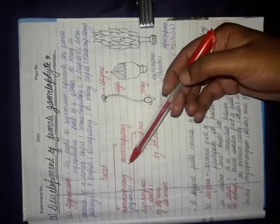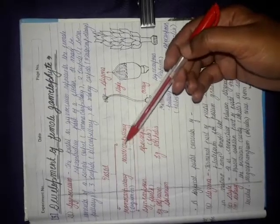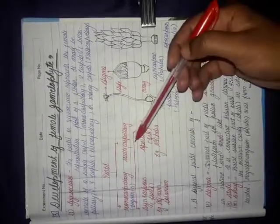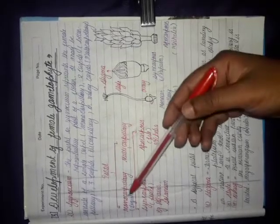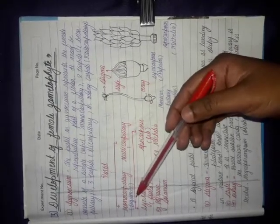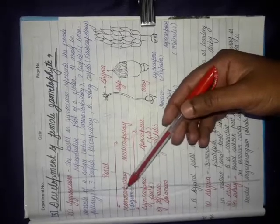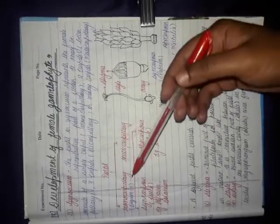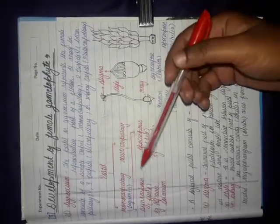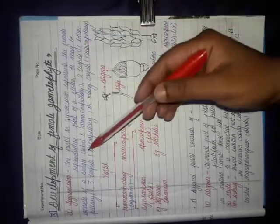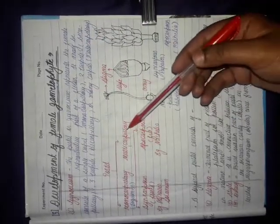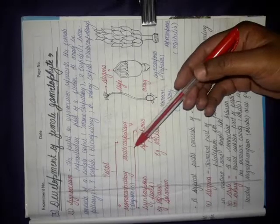The multicarpellary condition is further of two types. If there is a single carpel, it will be monocarpellary, belonging to the Leguminaceae family. If you get more than one carpel, we will put it in multicarpellary. Individually you can read it as bicarpellary or tricarpellary. So multicarpellary means more than one carpel, and there are two conditions.